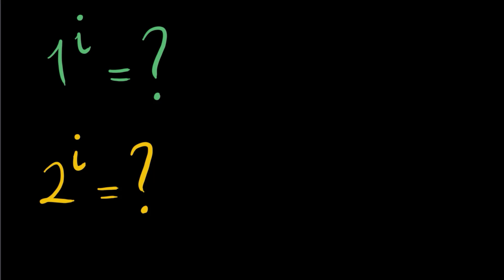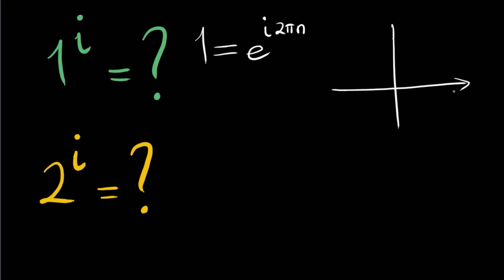This one is equal to e to the power i times two pi n. Since this i just lies on this real axis, the angle here is zero plus two pi n, so this is equal to two pi n. The length here is one, so one can be shown as e to the power of i times two pi n.